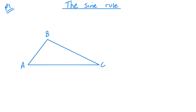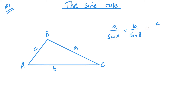Just like the cosine rule, this is for non-right-angled triangles, and I'll label the triangle in very much the same way, with the capital letters for the angles and the lowercase letters for the sides, and they are opposite each other. The formula looks something like this: a over sine A is equal to b over sine B is equal to c over sine C.